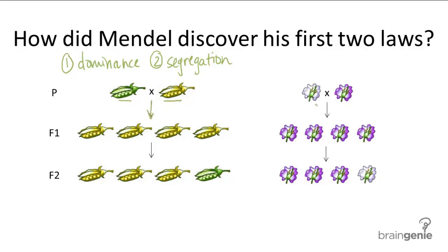And when he crossed pea plants with white flowers versus pea plants with purple flowers, the offspring would only have purple flowers. And this is known as the parental generation. And this is the F1 generation or the offspring of the parental generation.